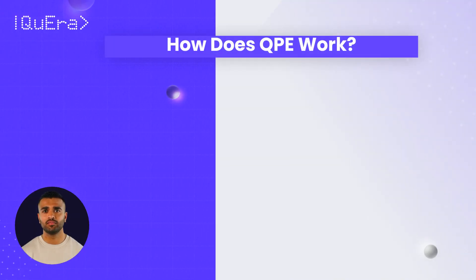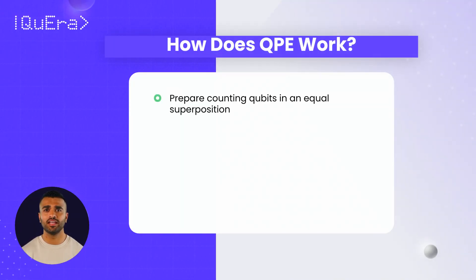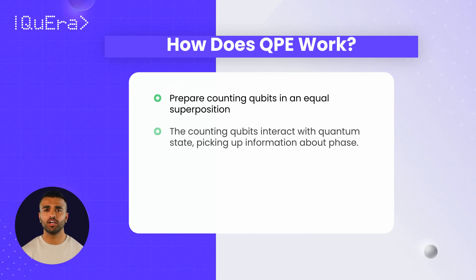The QPE algorithm involves four main steps. First, the counting qubits are prepared in an equal superposition. Next, the counting qubits interact with the quantum state by applying controlled unitary operations, picking up information about its phase.